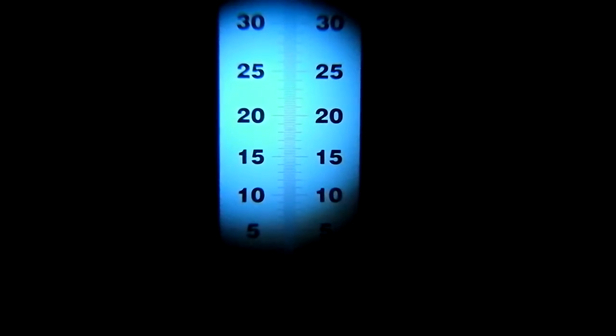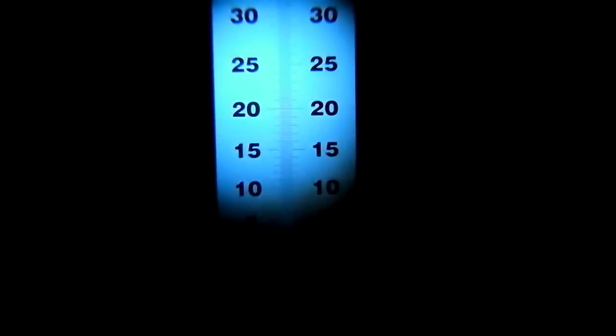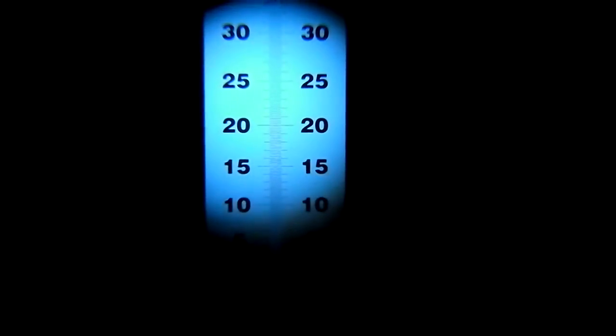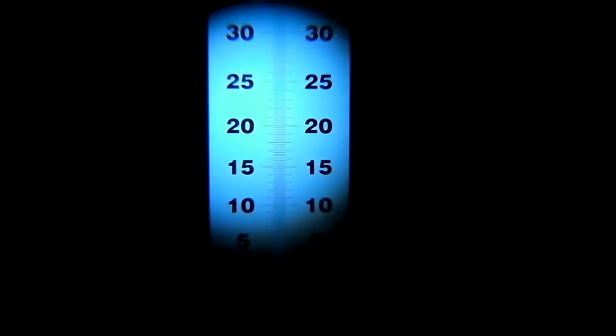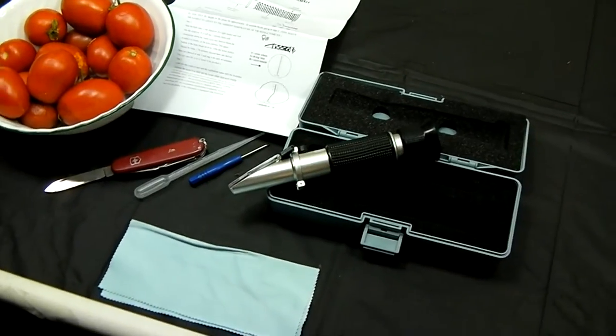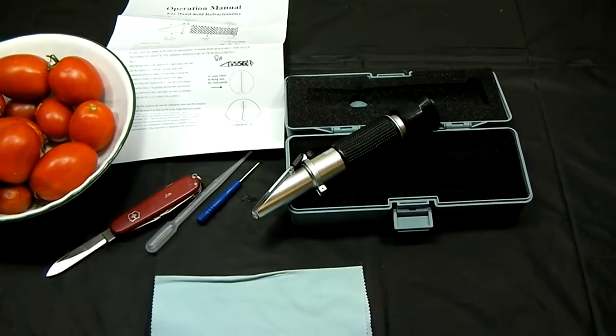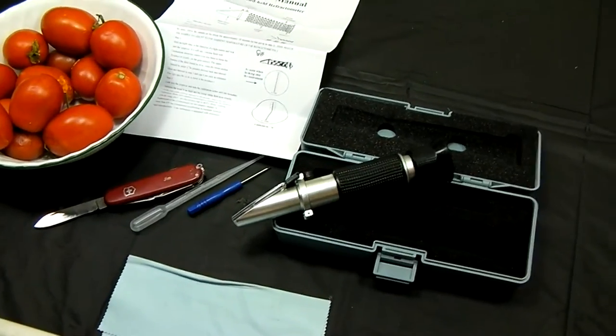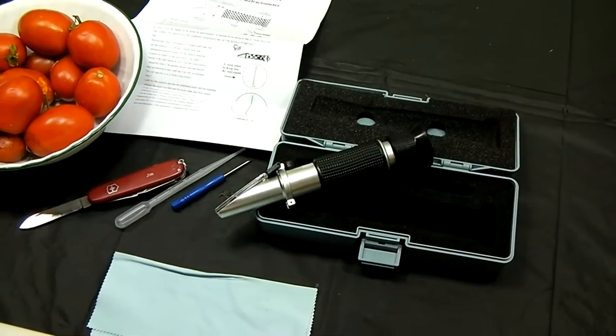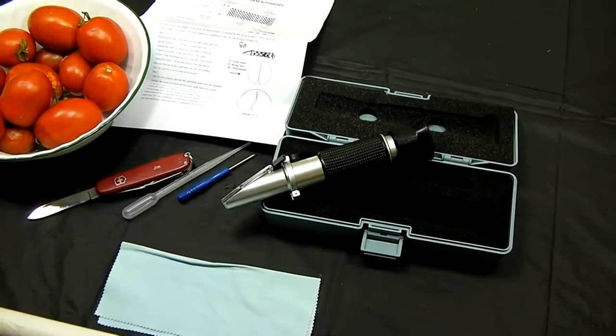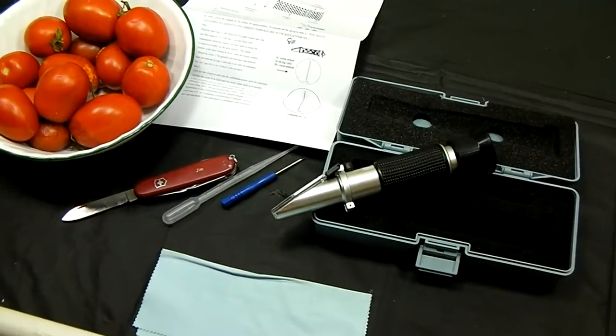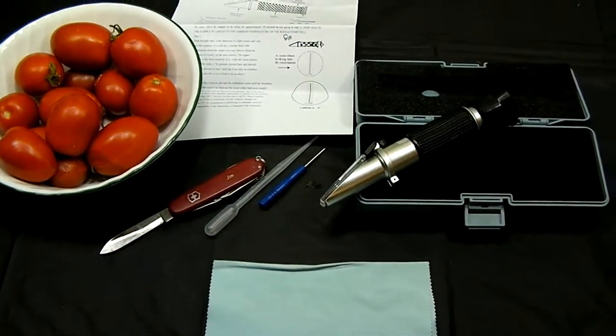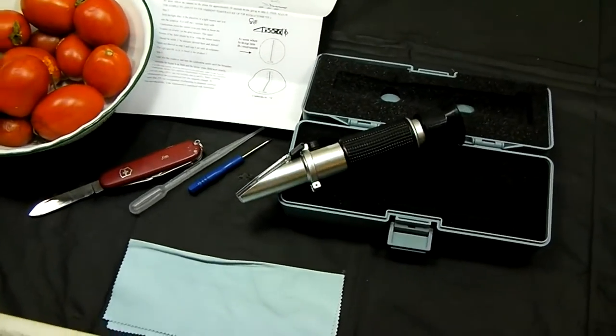This is looking inside the scale. You can see it goes from 0 to 30 on this one. This is actually looking through the refractometer. You can get these in different scales. The 0 to 30% is good for fruits and vegetables. For our purposes, for checking your fruits and vegetables, the 0 to 30% is fine.